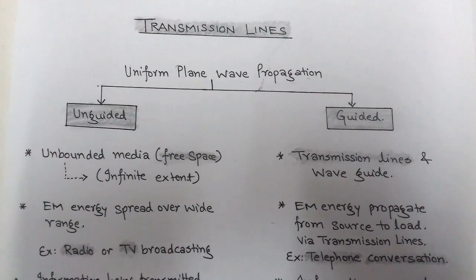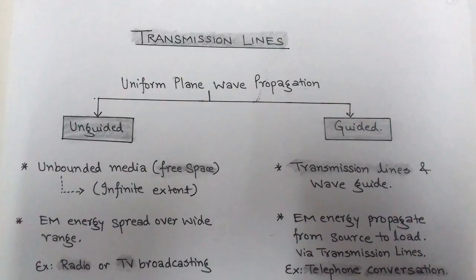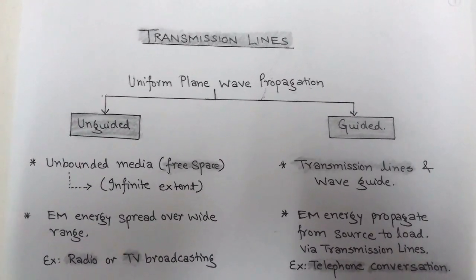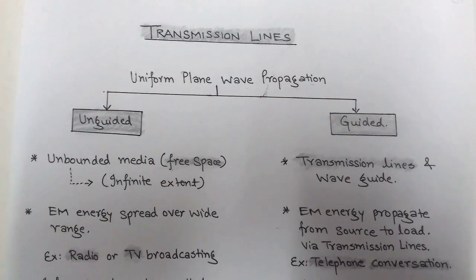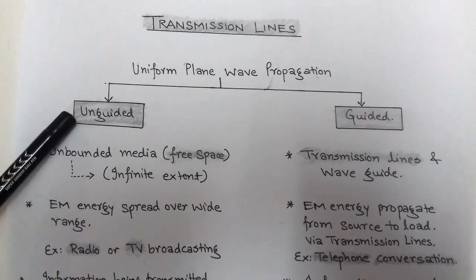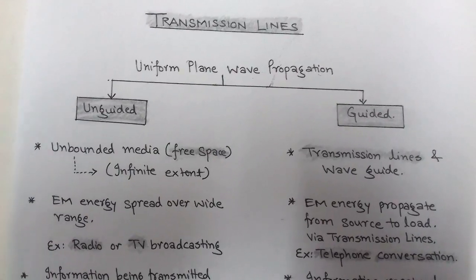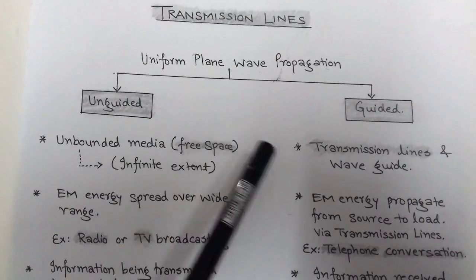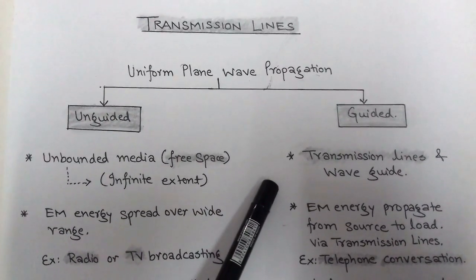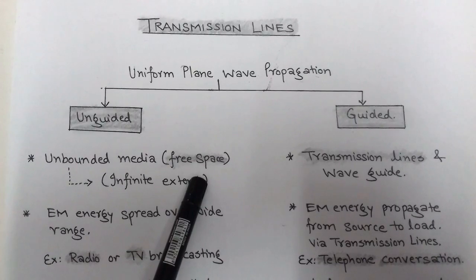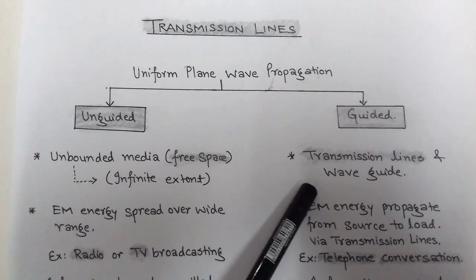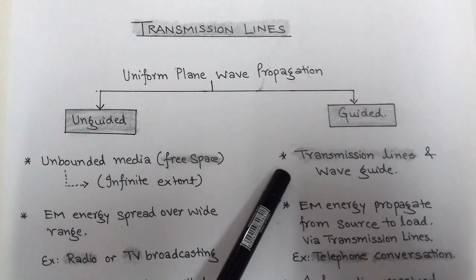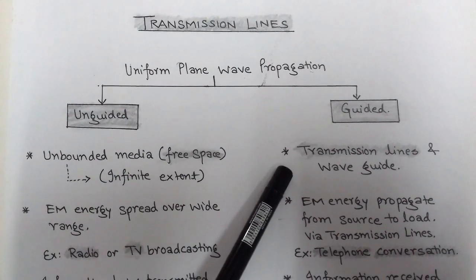The topic is Transmission Lines. As we know, the Uniform Plane Wave or Electromagnetic Wave can propagate in two ways: first is unguided propagation, where the medium is free space, and second is guided propagation, where the medium is any physical medium such as transmission lines and waveguides.